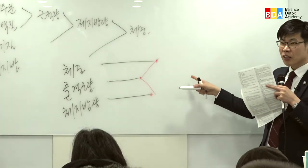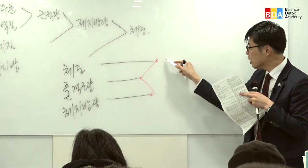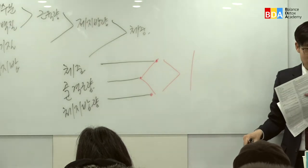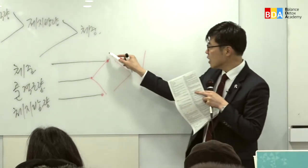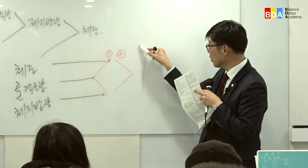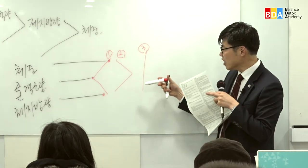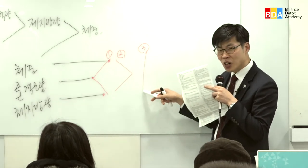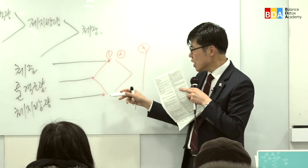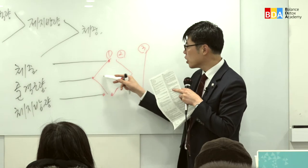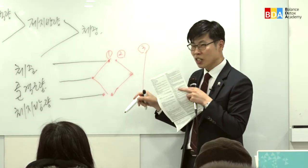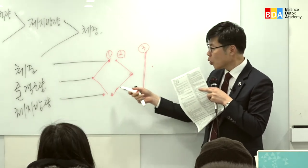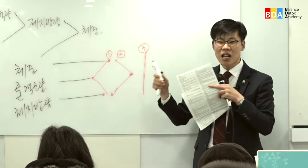이어보시면 어떤 분은 이렇게 들어가고 어떤 분은 이렇게 될 수도 있어요. 1번, 2번, 3번 어떤 게 제일 좋을까요? 2번 같은 경우는 체지방량은 적고 골격근량은 많고 체중도 정상입니다. 골격근량이 많은 것이 에너지 레벨이 높은 것입니다.